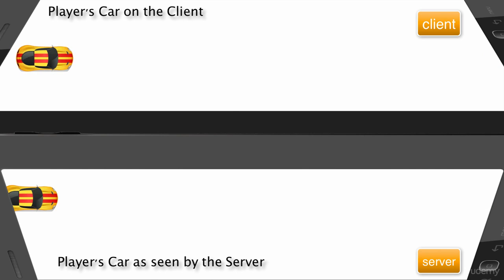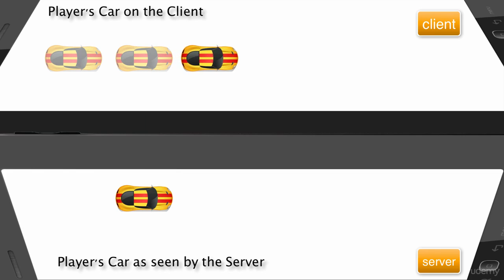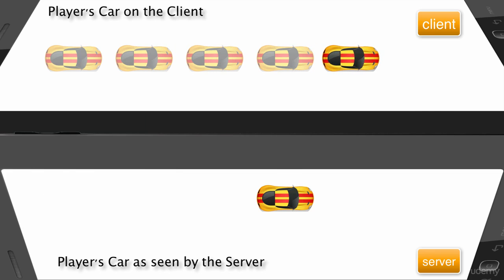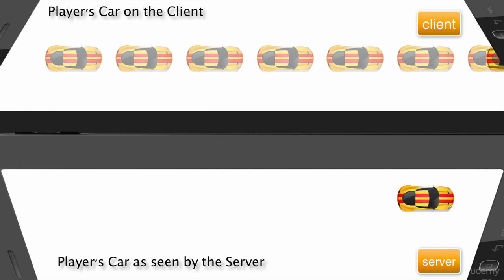Adding complexity is the network lag, or the time it takes to transmit data from the client to the server and then from the server to the other clients. By the time the server and the other clients receive this data about the car's position, the car has already moved on. Therefore the information the server and the other clients have is always from the past.